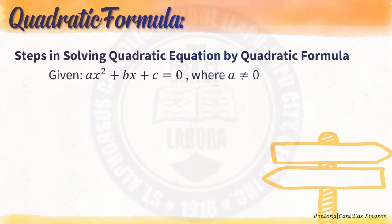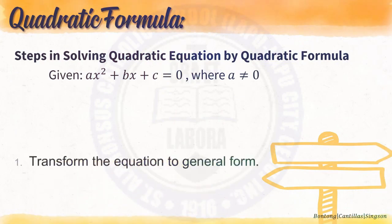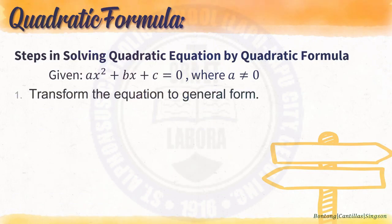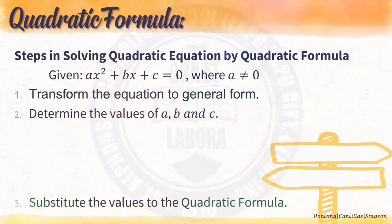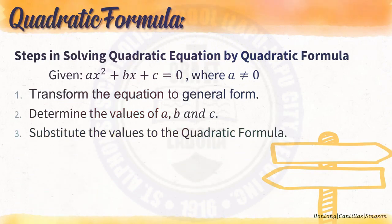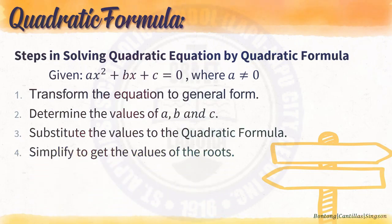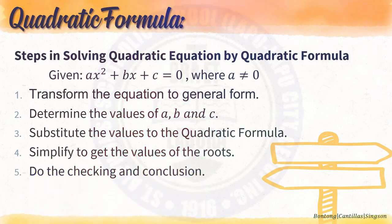To solve a quadratic equation by quadratic formula, follow these steps. Step 1: Transform the given equation into the general form of the quadratic equation. Step 2: Determine the values of a, b, and c. Step 3: Substitute the values into the quadratic formula. Step 4: Simplify to get the values of the roots. Step 5: Do the checking and conclusion.